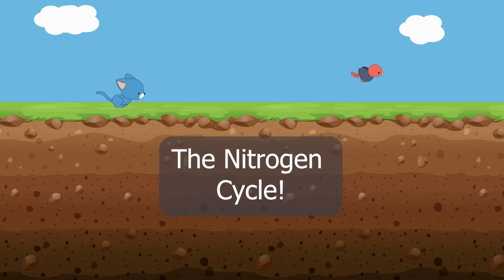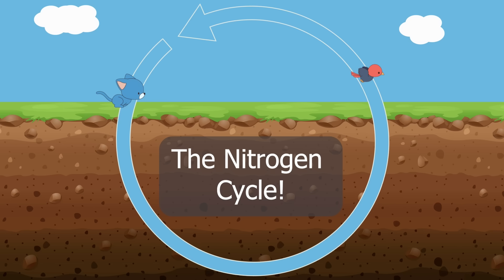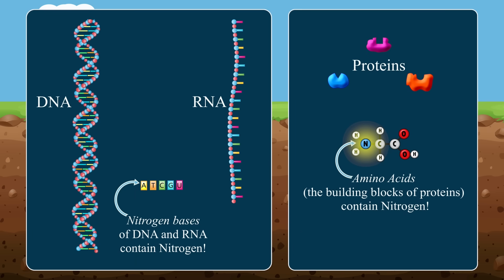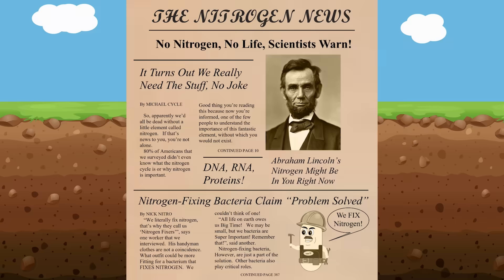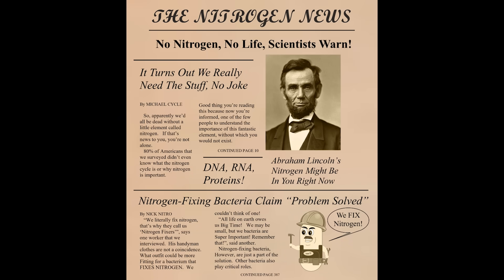Today we will focus on the nitrogen cycle, the process by which the element nitrogen moves around in ecosystems. The nitrogen cycle is crucial for all life on earth, because nitrogen is needed to make some of the most important molecules for life, including DNA, RNA, and proteins that are needed by all living things. Without nitrogen, there would be, literally, no life as we know it. So it's important to understand at least a little bit about how the nitrogen cycle works. Let's get into it.